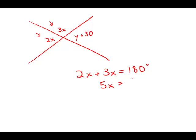2x plus 3x is 5x. And if we divide both sides by 5, x equals 180 divided by 5, is 36. So that means that this angle here is actually a 72 degree angle.